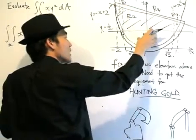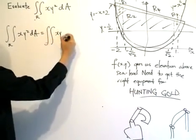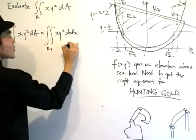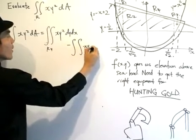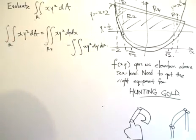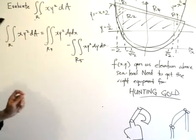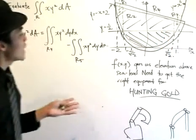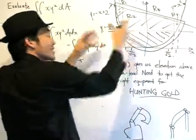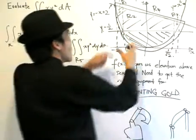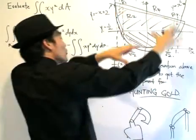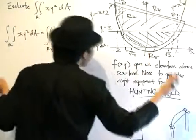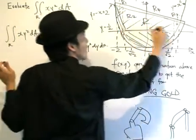Region R is this shaded region, and region R4 is R plus R5. So I'm going to first find the double integral of the function f(x,y) dy dx over R4, and then subtract the double integral of the same function over region R5. Region R5 is simply this extra region here. Since the double integral gives net signed values, subtracting R5 from R4 ultimately gives us the double integral over region R, which is exactly what we want.